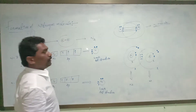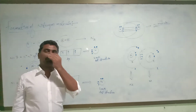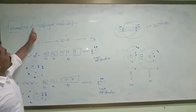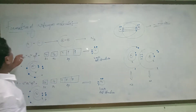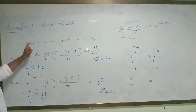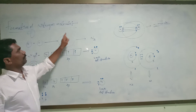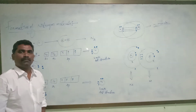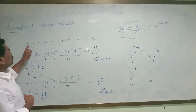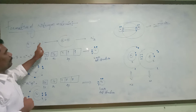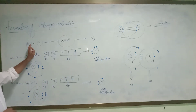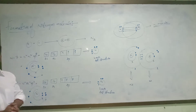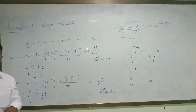Hi students, now we are going to discuss about the formation of nitrogen molecule — how a nitrogen molecule is formed. Two nitrogen atoms are combined to become a molecule, that is a nitrogen molecule. We are going to discuss how two nitrogen atoms are combined together to form a nitrogen molecule.